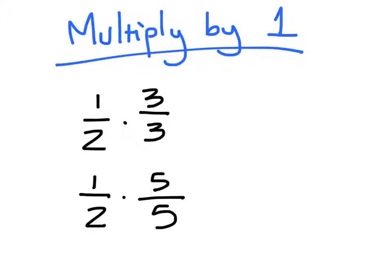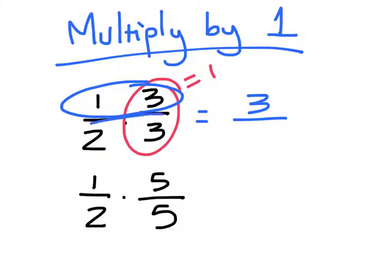The next idea to talk about is the idea of multiplying by 1. So I have the fraction 1 half, and I multiply it by 3 over 3, which is 1. So if I multiply these fractions together, again, the tops together, I get 3. The bottoms together, I get 6. I can simplify this, but my point is to show you that this fraction, 1 half, is the same as 3 sixths.